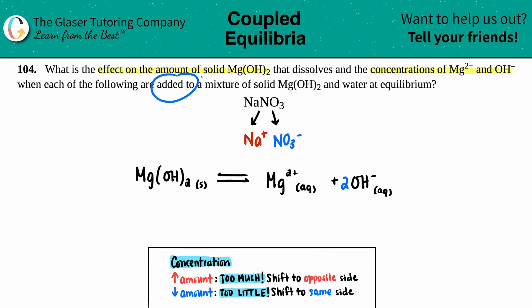Now, if we're adding NaNO3, that means that the NaNO3 amount has to increase. And with that, that means that the amount of your ions will also increase because it's a soluble salt.